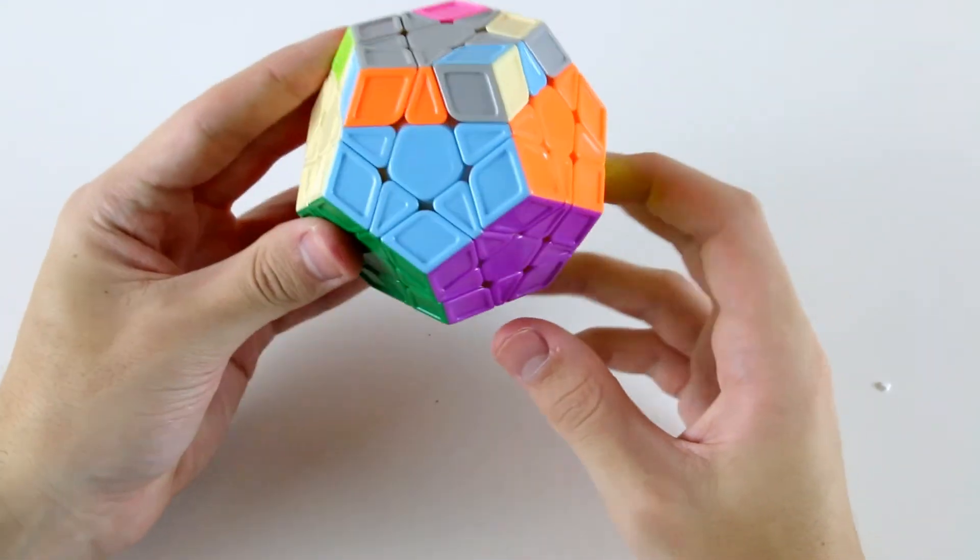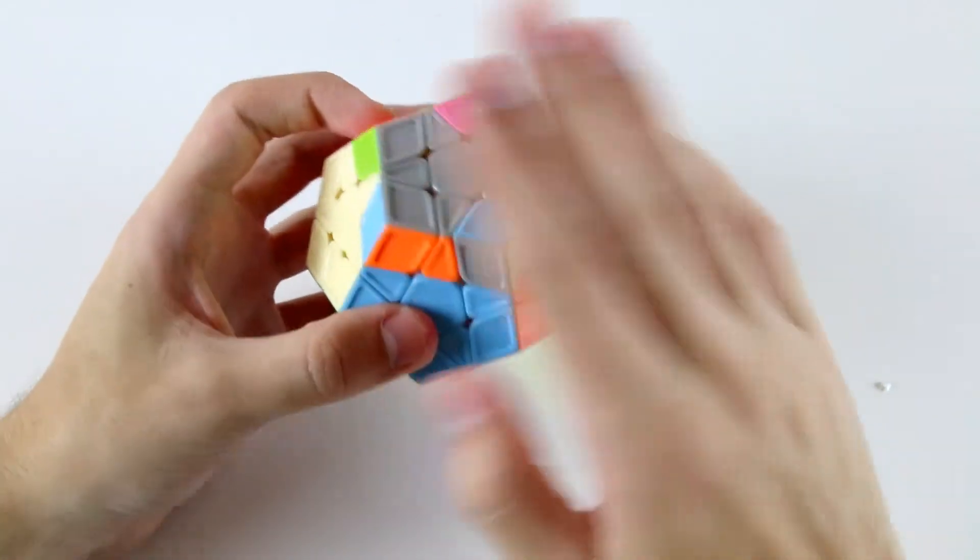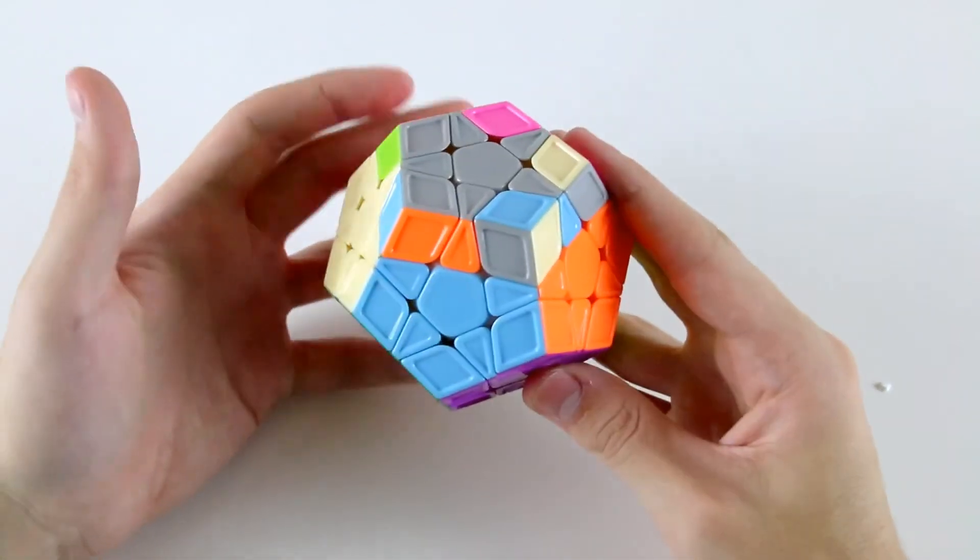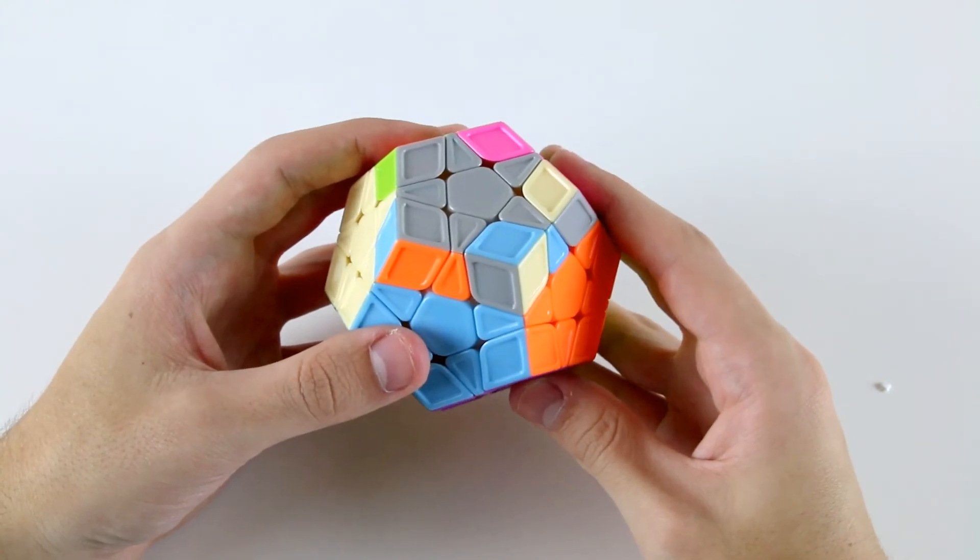And now you'll see we've solved our entire F2L and S2L and we're up to our last layer. So that is the Balint method for solving the S2L of the Megaminx.